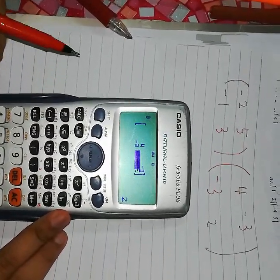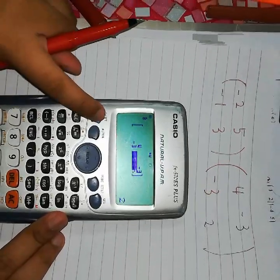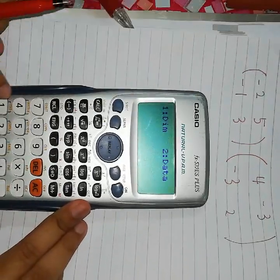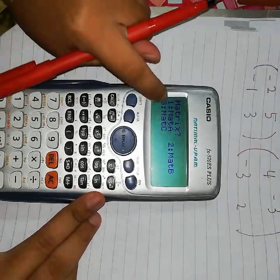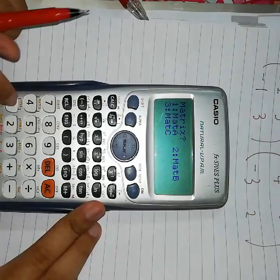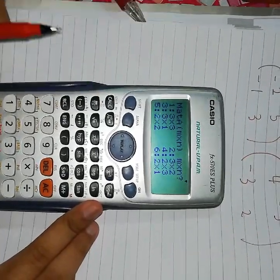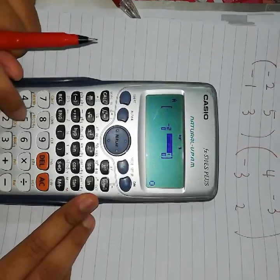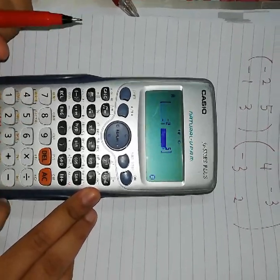Selepas tu, tekan shift dan matrix. Dan tekan dim nombor 1. Lepas tu, tekan balik nombor 1 ni, mat A. Isi balik lajur dia. So isi balik. Negatif 2, 5, negatif 1, 3.